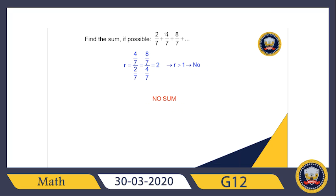Another example: these terms continue to infinity. Dividing (4/7) ÷ (2/7) gives r which is bigger than 1 in this case, so we don't have any summation. To summarize: if r is less than 1 we have the formula; if r is bigger than 1 we immediately say no summation. For arithmetic infinite series, we always say no summation.